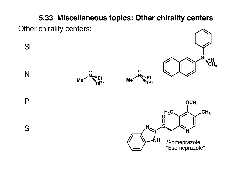Sulfur looks a little bit different because it can take on an expanded octet. If there is a tricoordinate sulfur, it takes on a pyramidal shape. Here's an example of a chiral molecule where sulfur is the chirality center — this is called S-omeprazole, also referred to as esomeprazole. This is Prilosec, the little purple pill for acid reflux, a very useful and widely prescribed medication.